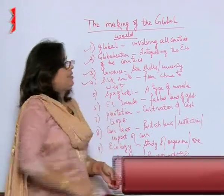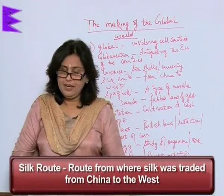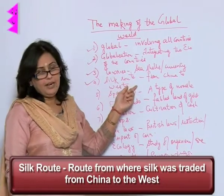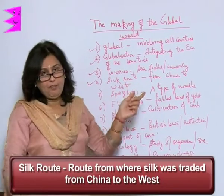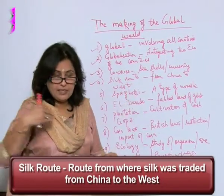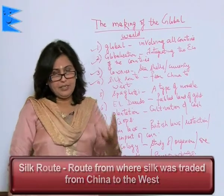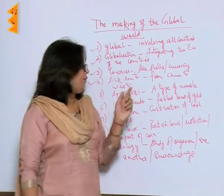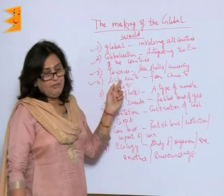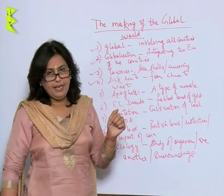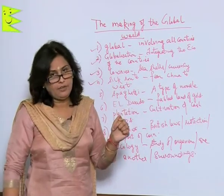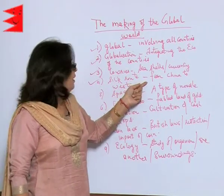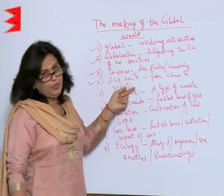Next is the 'Silk Route.' As the name suggests, the Silk Route is a route from where silk was traded. Since the main item of trade was silk, the route was called the Silk Route, and this ran from China to the west.